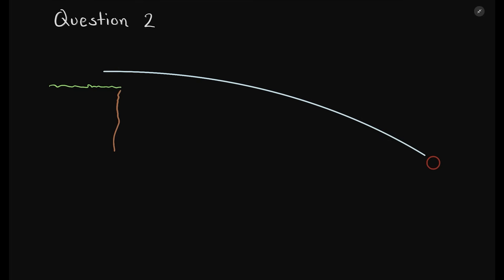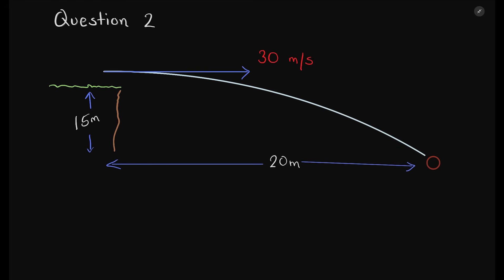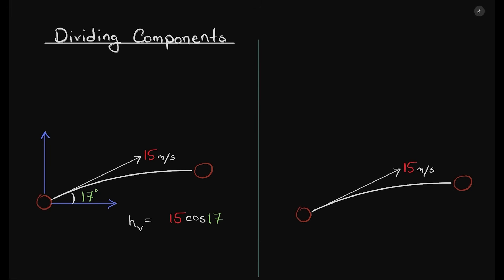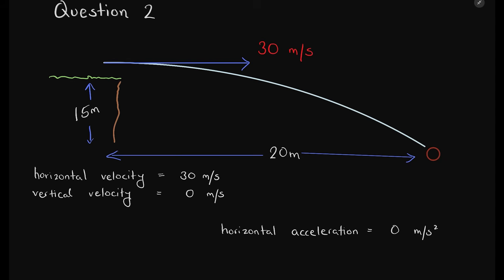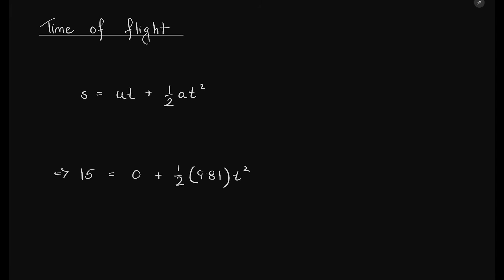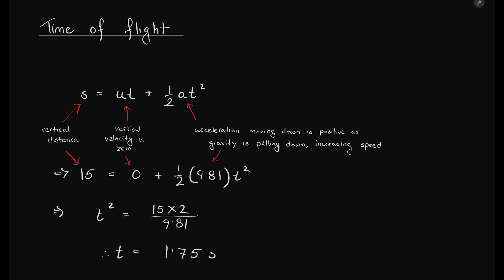Question 2 shows a ball thrown straight out of a cliff with an initial velocity of 30 meters per second to the right. The cliff is 15 meters high and the ball lands 20 meters away from the cliff. The initial horizontal velocity is 30 meters per second, and the initial vertical velocity is 0 meters per second, as the ball is thrown exactly horizontally. The initial horizontal acceleration is always 0, and the initial vertical acceleration is 9.81 due to gravity. To find the time of flight, we use s = ut + ½at² with vertical values. The answer comes out to 1.75 seconds.